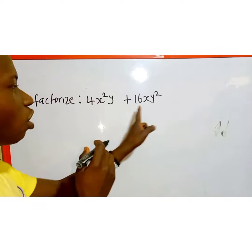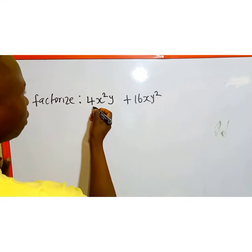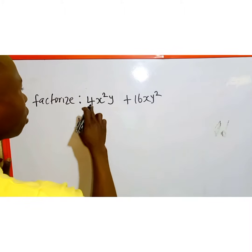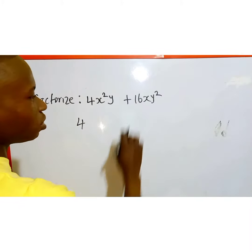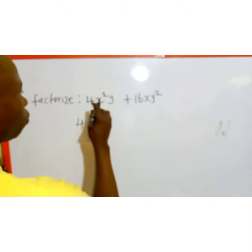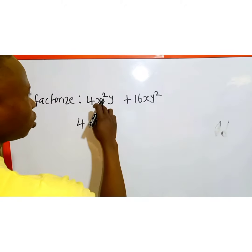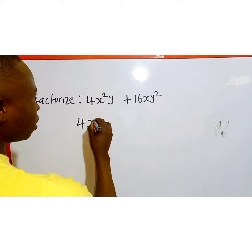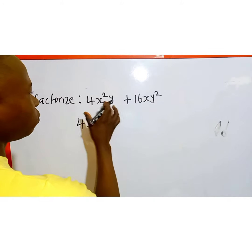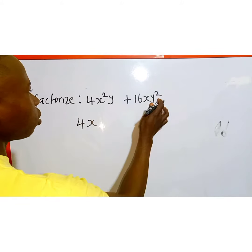In factorization, what you do is look for the common term. The common term here is 4, because 4 can go into 4 one time and it can also go into 16 four times. The next number we have is x squared, so we factor out x because x is common between these two. Y is also common, so we factor out y.